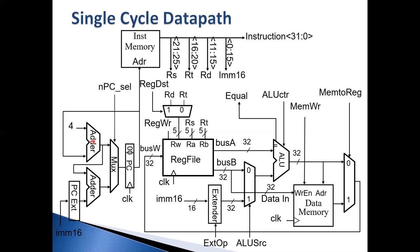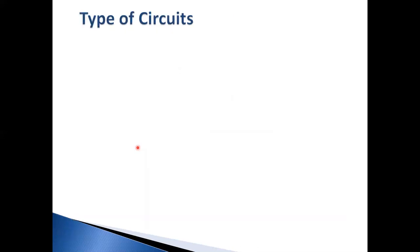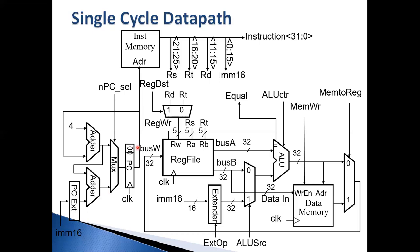Your next PC is either PC plus four if it's not a branch, or PC plus four plus the immediate if it's a branch instruction and the condition is true. This channel for the branch target is turned on only when it's a branch instruction and the result is true — otherwise we always take the next sequential instruction. This is the complete single-cycle data path. I'll take a break here and continue with the second part of the lecture in the second video.